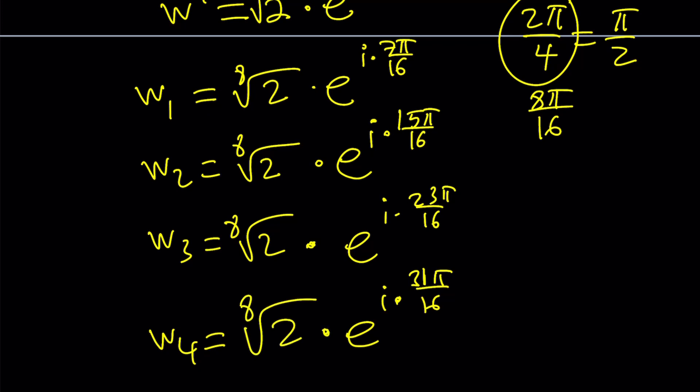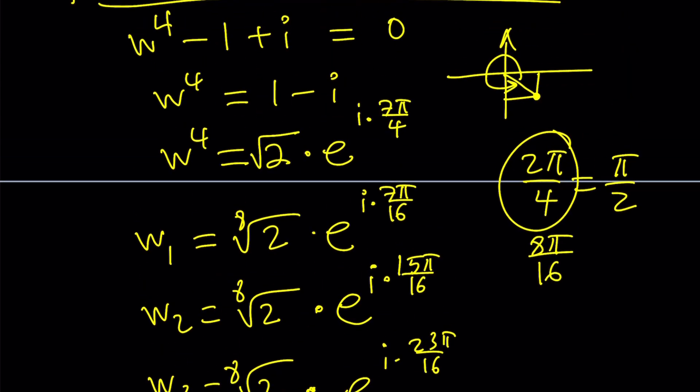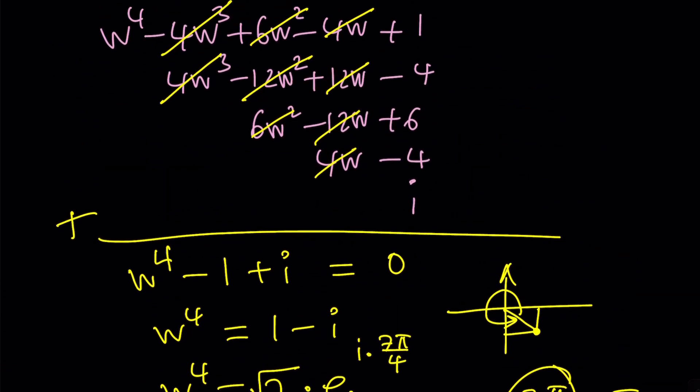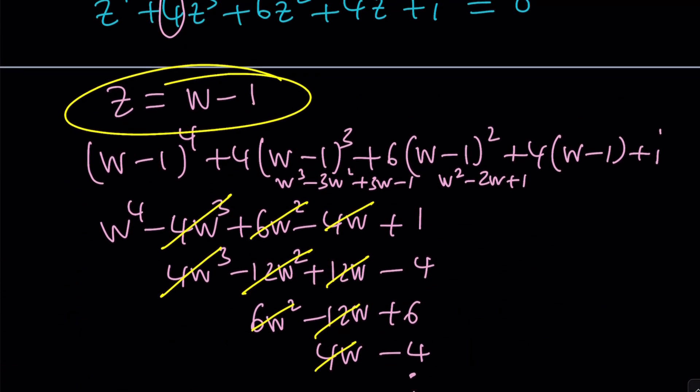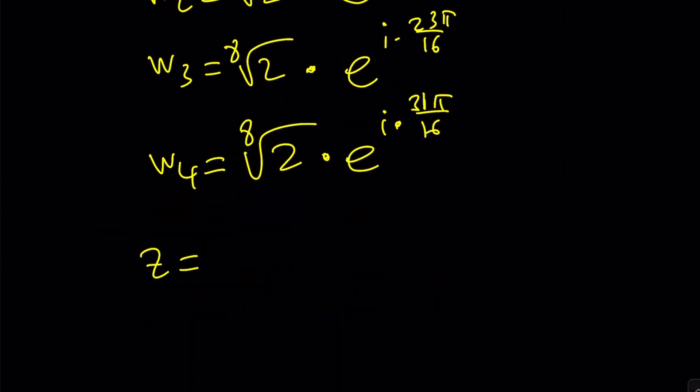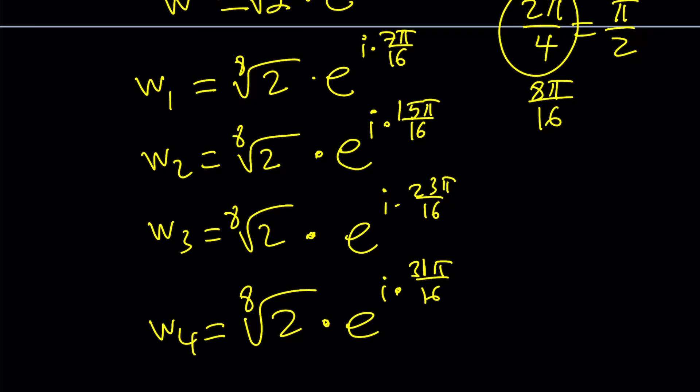But guess what? We're not looking for W. We're looking for Z. And you can basically just back substitute by adding negative 1 or subtracting 1 from the W values. And those are going to be the Z values. So in other words, Z is equal to negative 1 plus W. And I wanted to put the negative 1 first because these are in polar form.